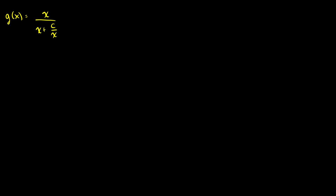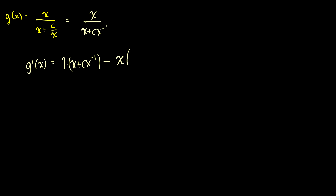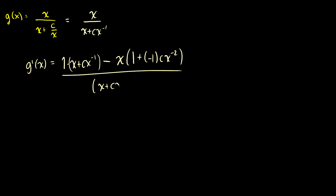Second question, we have x over x plus cx. I want to simplify this a little bit, make this look nicer to work with. This will be x plus cx to the negative 1. Again, let's use the quotient rule. So g prime of x is going to be the derivative of x, which is 1, times the bottom, which is x plus cx to the negative 1. Then we subtract the top, which is x, times the derivative of the bottom, which will be 1 plus negative 1 cx to the negative 2. And this is all over the bottom squared, so it'll be x plus cx to the negative 1 squared.